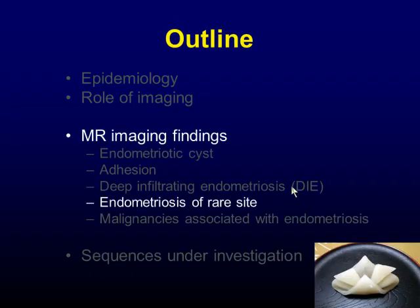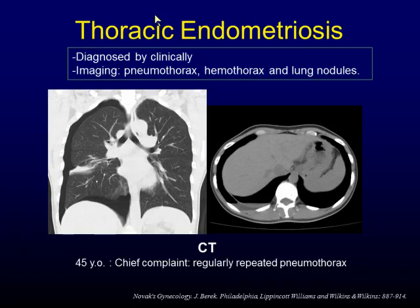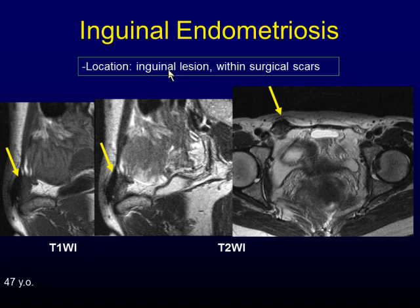I will show a few cases of rare sites of endometriosis. Thoracic endometriosis is uncommon and is usually diagnosed clinically. Most imaging findings are pneumothorax, hemothorax, and lung nodules. This patient complained of regularly repeated pneumothorax. At operation, a small defect was found on the diaphragm, suggesting migration of endometrial tissue from the peritoneal cavity to the pleural cavity. Endometriosis can also occur in cutaneous tissue, such as the inguinal region or within surgical scars, usually after prior gynecological operation. At MRI, the inguinal region shows low signal intensity on both T1 and T2-weighted image due to fibrosis.